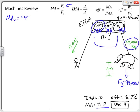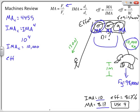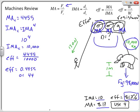For the compound machine with 4 identical machines: the IMA_compound = IMA_individual^4 = 10^4 = 10,000. For efficiency, we can either raise 0.817 to the 4th power or compute 4455 / 10,000. Either way, the efficiency of the compound machine is 0.4455, or approximately 44.6 percent — the machine becomes less efficient as more are added.